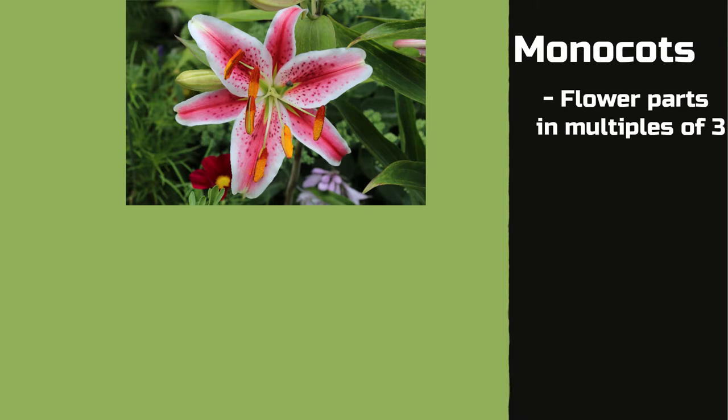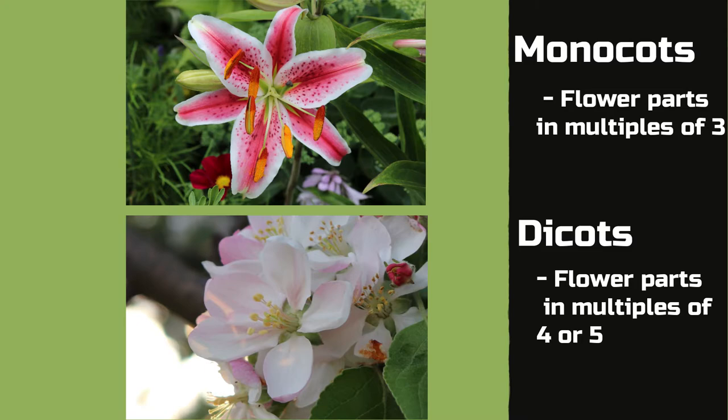Number two: monocot flowers usually have flower parts in groups of three — usually three or six. So the stamens, petals, and other parts are found in multiples of three. Whereas dicots, on the other hand, usually have parts in multiples of four or five — so four, five, eight, ten, etc.